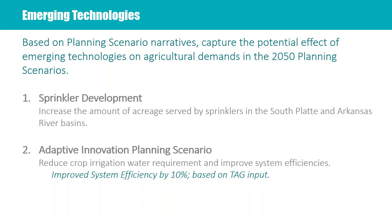The last adjustment is emerging technologies. We needed to take that narrative out of the water plan and put real numbers to it, and the TAG had quite a bit of discussion and feedback on how to apply an emerging technology. What do we mean by emerging technologies? We could be talking about seed technologies that are more drought resistant, irrigation scheduling, increasing existing sprinkler efficiencies, or things that perhaps are not even invented yet, as the water plan talks about. We needed to capture all sorts of technologies, and we did that basically in two ways.